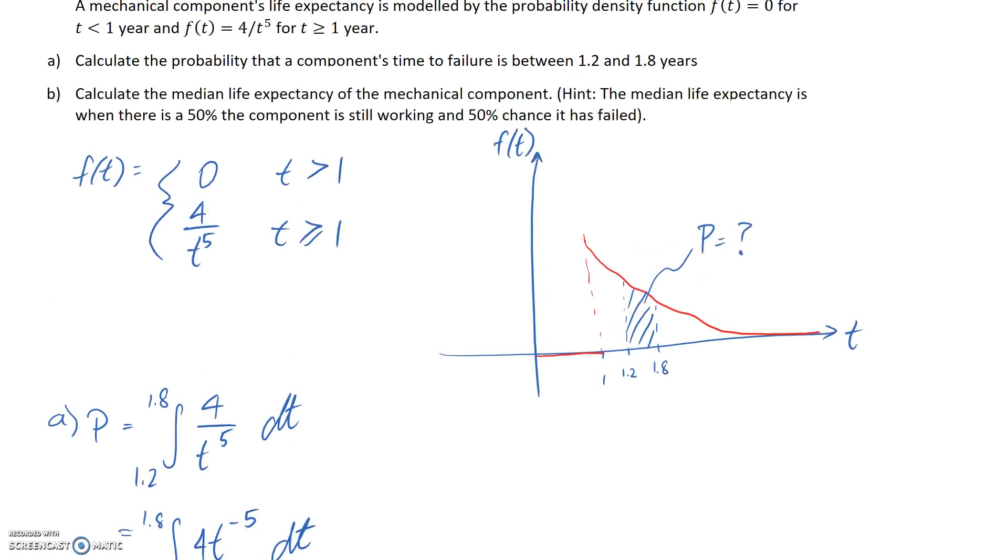Now let's have a look at part B. We're asked to calculate here the median life expectancy of the mechanical component, and we're given a hint on how to do that. So median life expectancy, by definition, is going to be when there's a 50% chance that the component is still working, and a 50% chance that it has failed. So I'm going to approach this by redrawing our diagram, and we should be able to look at the area within the curve where 50% of the components are working and 50% are not working.